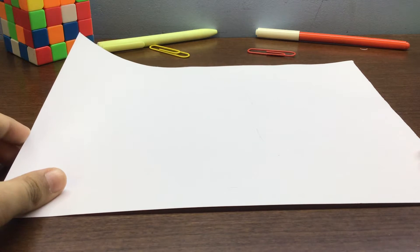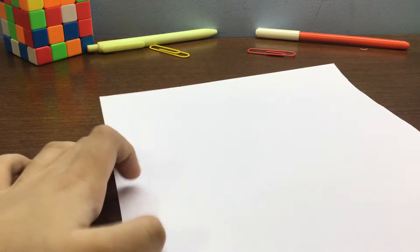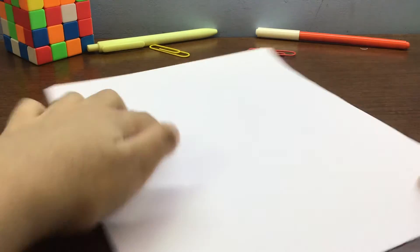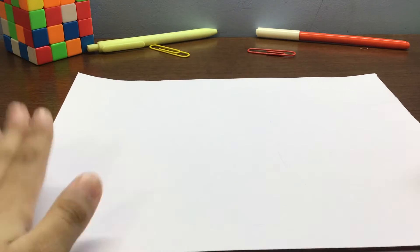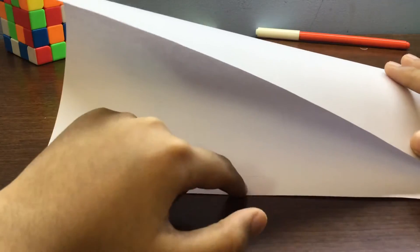So first hold it like this, you see here, and then actually hold it like this in landscape orientation. And then fold it like this so this edge meets this edge. Try to make it exact.